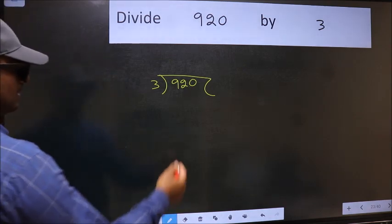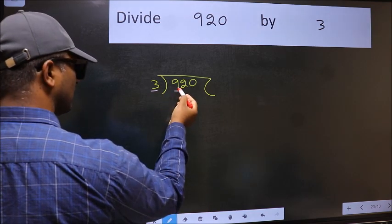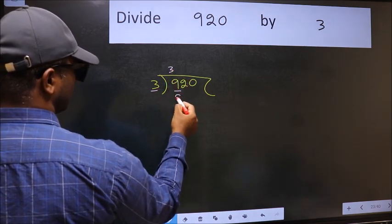Next, here we have 9 and here 3. When do we get 9 in 3 table? 3 times 3 is 9.